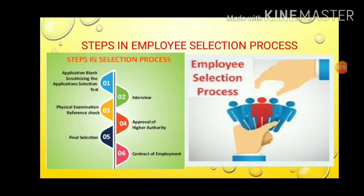What are the steps in the employee selection process? A comprehensive selection process involves various steps. The first one is the application blank. After scrutinizing the applications, we move to the selection test. Look at the picture on the right-hand side — the employee selection process. There are five employees shown, but only one candidate is highlighted in red, representing the right person for the right job.